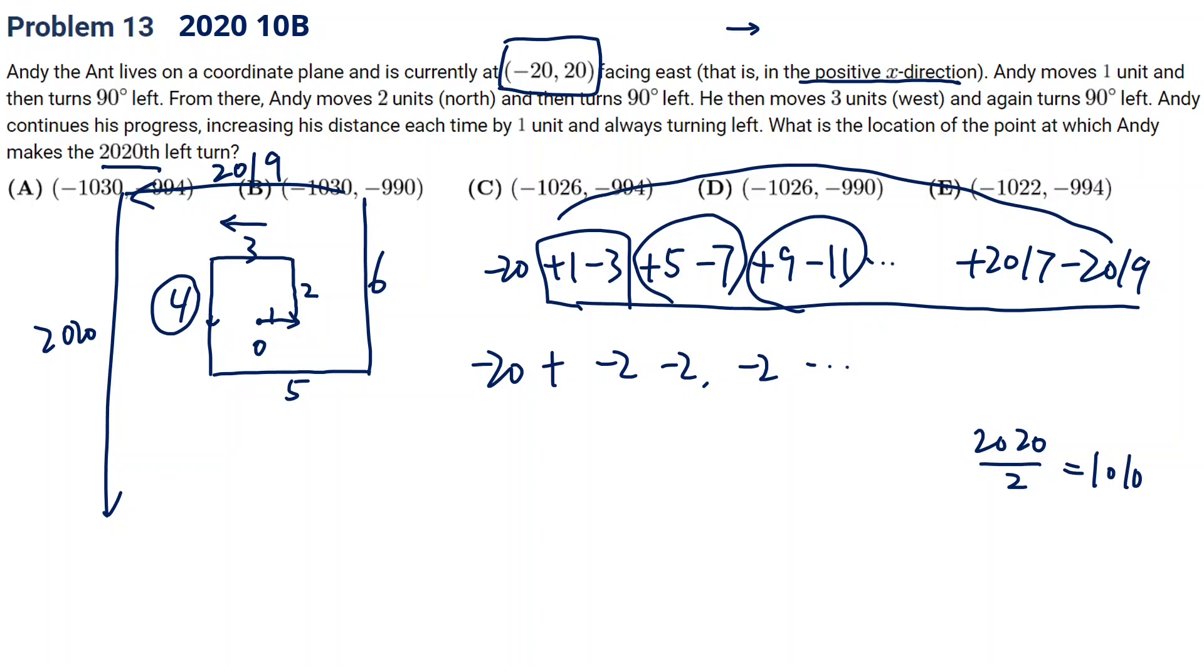It's 1,010 numbers. 1,010 numbers you can divide by 2, it's 505. So every pair gives us negative 2. So it's actually negative 2 times 505. This is the sum of all those numbers.